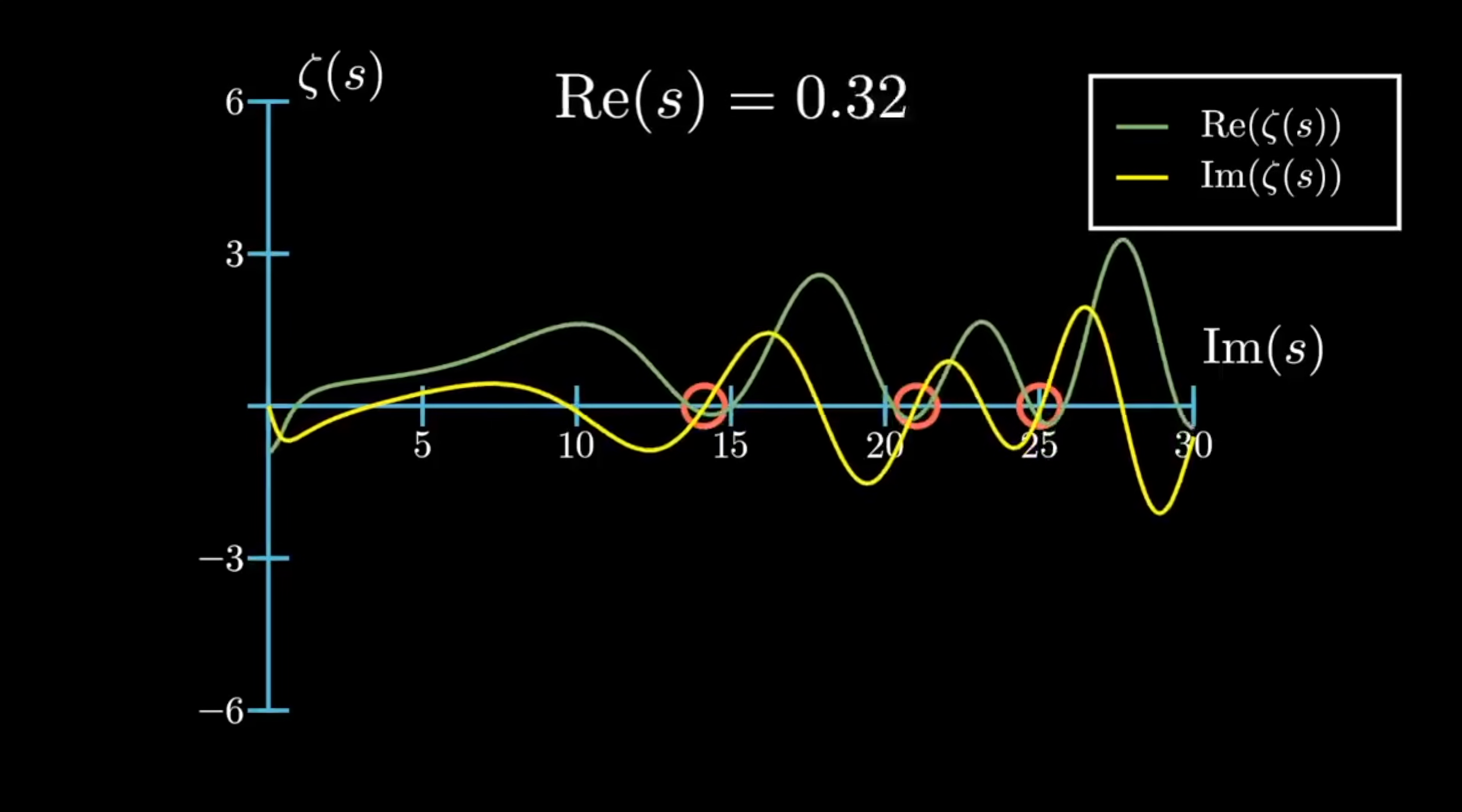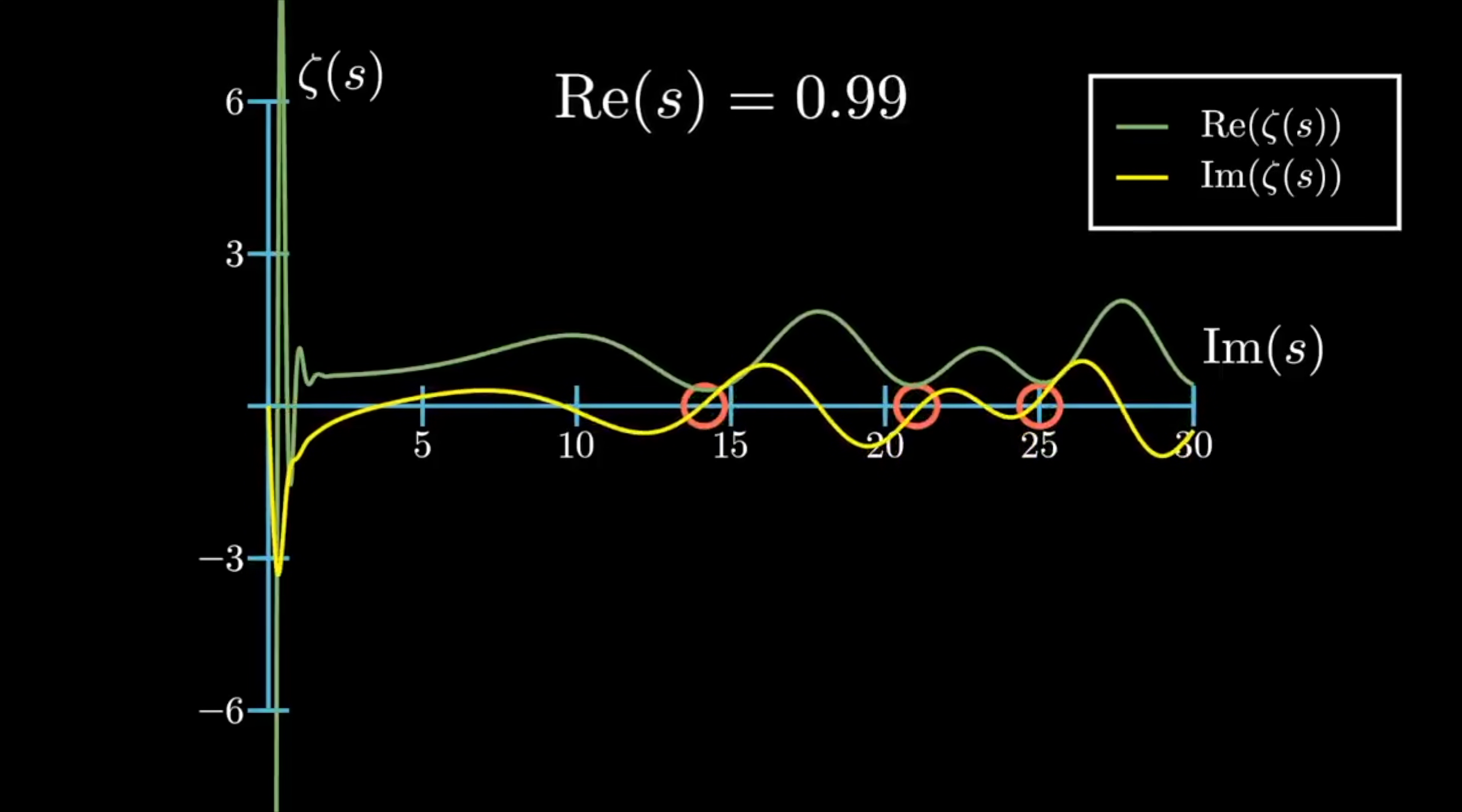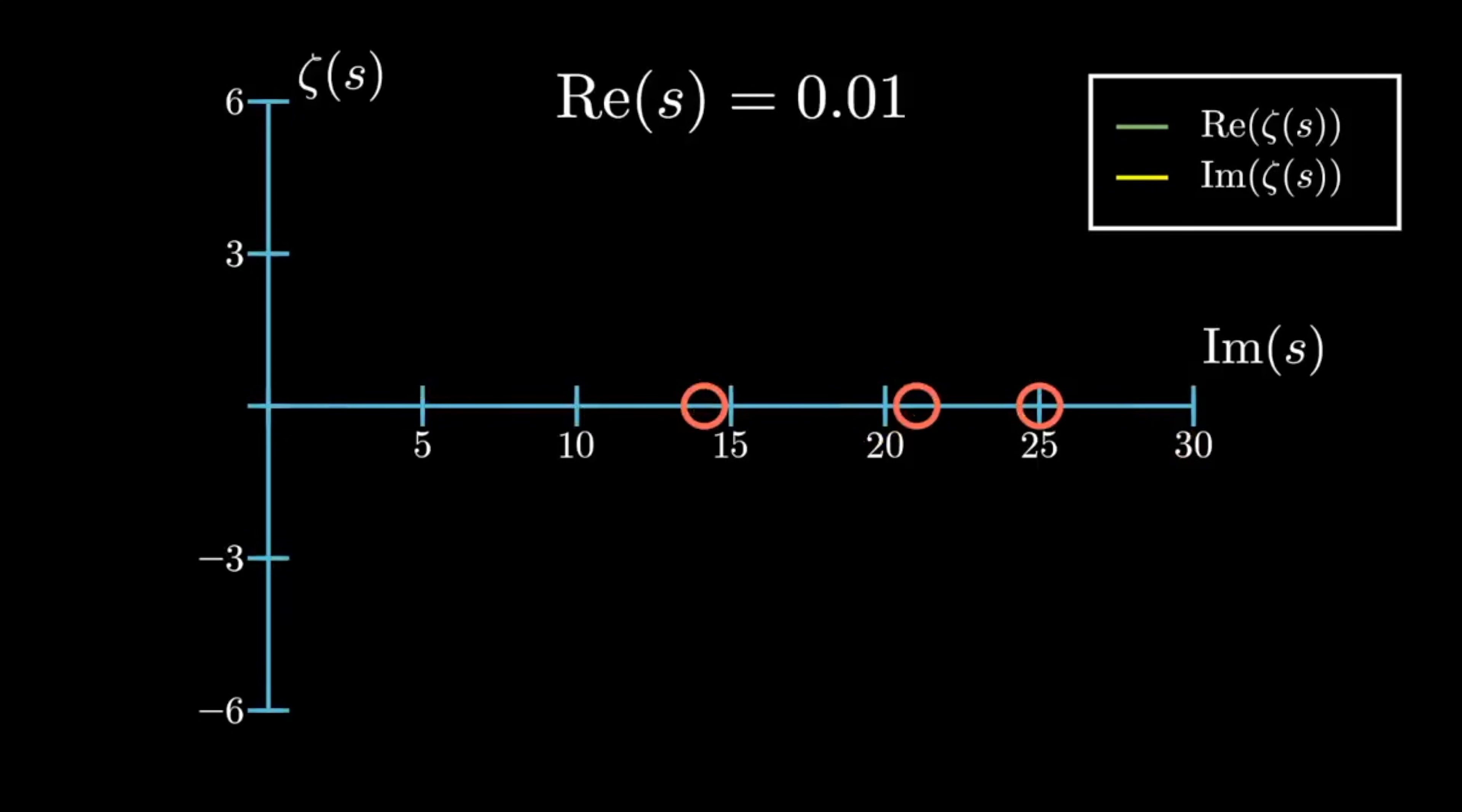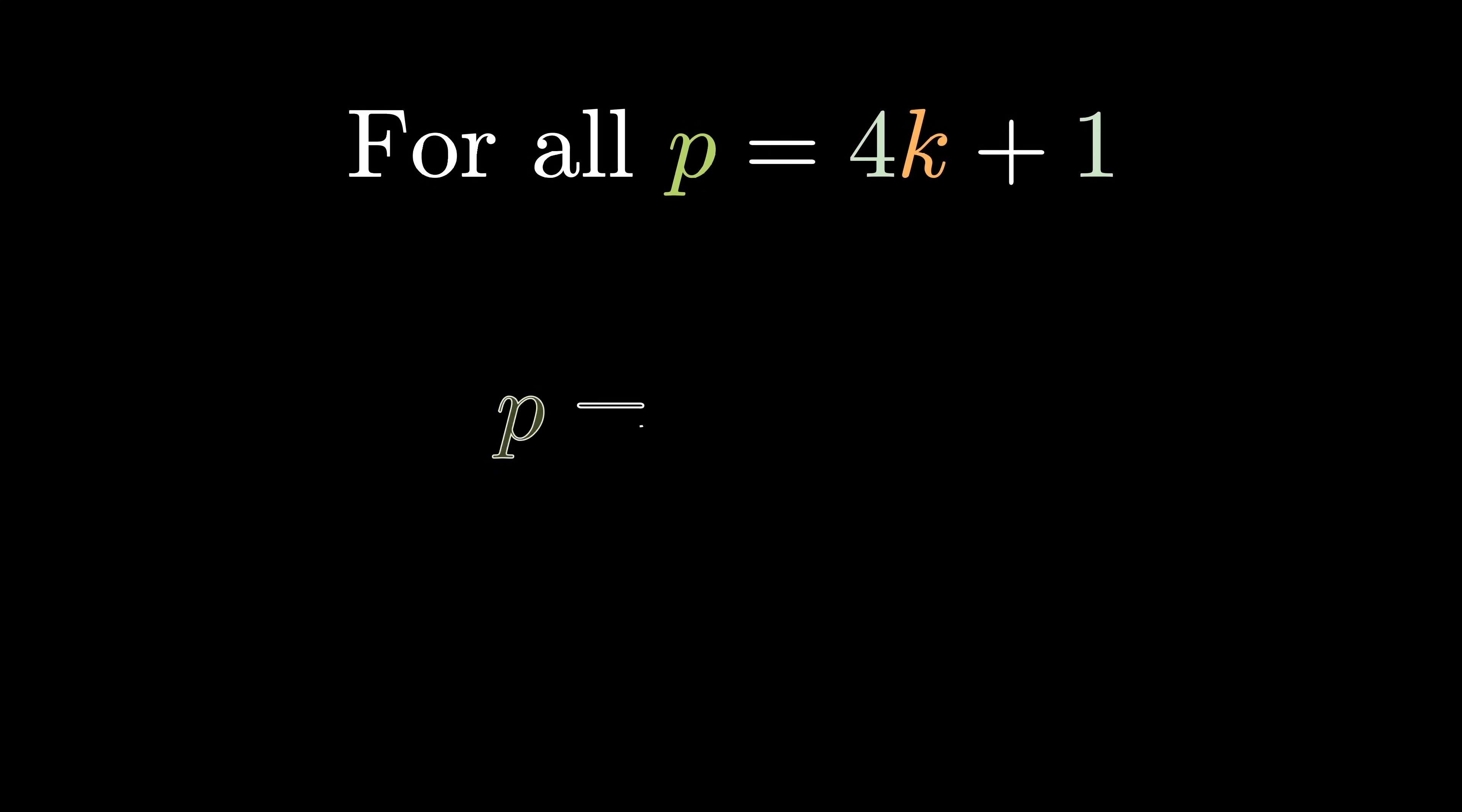My favorite thing about number theory is how simple the theorems are to state but how wildly complicated the proofs are, especially when they touch on unexpected areas of math. This proof is no exception with some beautiful visuals to showcase.